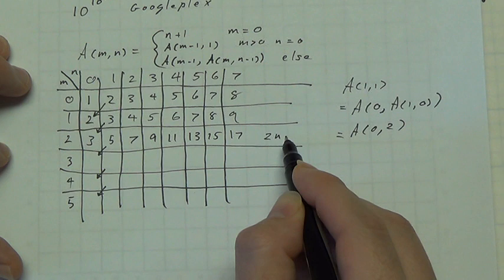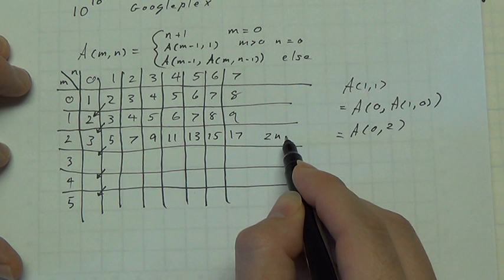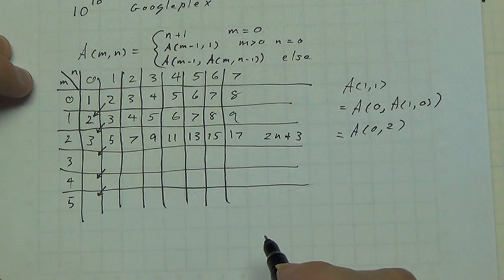And in general, this is 2n plus 3. Okay, put 5 down here.